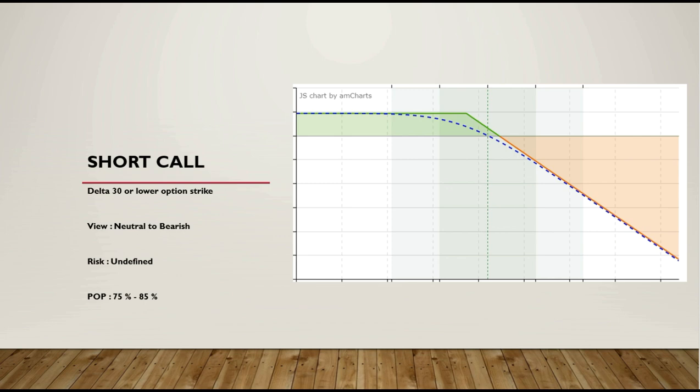This is the view. The risk is undefined — unlimited loss. We have the market going to the bottom. We want to get the premium at the strike price. The risk of naked selling is unlimited loss.